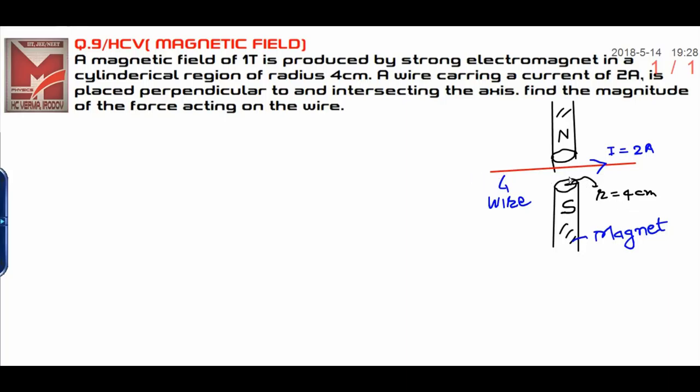A wire is placed along the axis carrying a current of 2 amperes. You need to calculate the force acting on this wire in the magnetic field region.